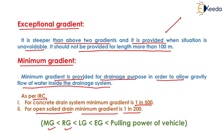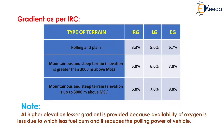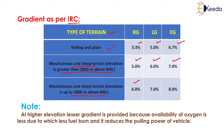Minimum gradient < rolling gradient < limiting gradient < exceptional gradient, and all gradients must be less than the pulling power of the vehicle. As per IRC, for rolling and plain terrain: rolling gradient 3.3%, limiting gradient 5%, exceptional gradient 6.7%. For mountainous and steep terrain with elevation greater than 3000 m above MSL: rolling 5%, limiting 6%, exceptional 7%. For mountainous and steep terrain up to 3000 m above MSL: rolling 6%, limiting 7%, exceptional 8%.